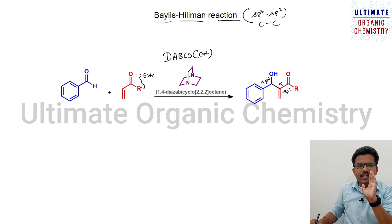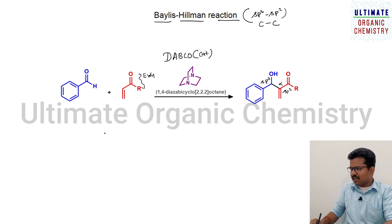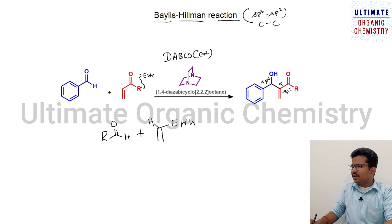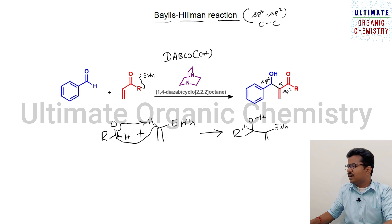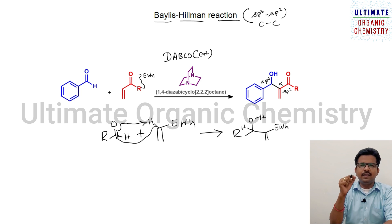If this question is asked in an examination, you should be able to give the answer as soon as possible. Here is the shortcut: you have to write the aldehyde part first, and also you have to write the alkene part where you have the electron-withdrawing group. The hydrogen of the alpha carbon reacts with these two centers — oxygen takes this hydrogen atom and the alpha carbon directly connects with the carbonyl carbon, leading to the formation of a product with an OH group, a double bond connected to the electron-withdrawing group.